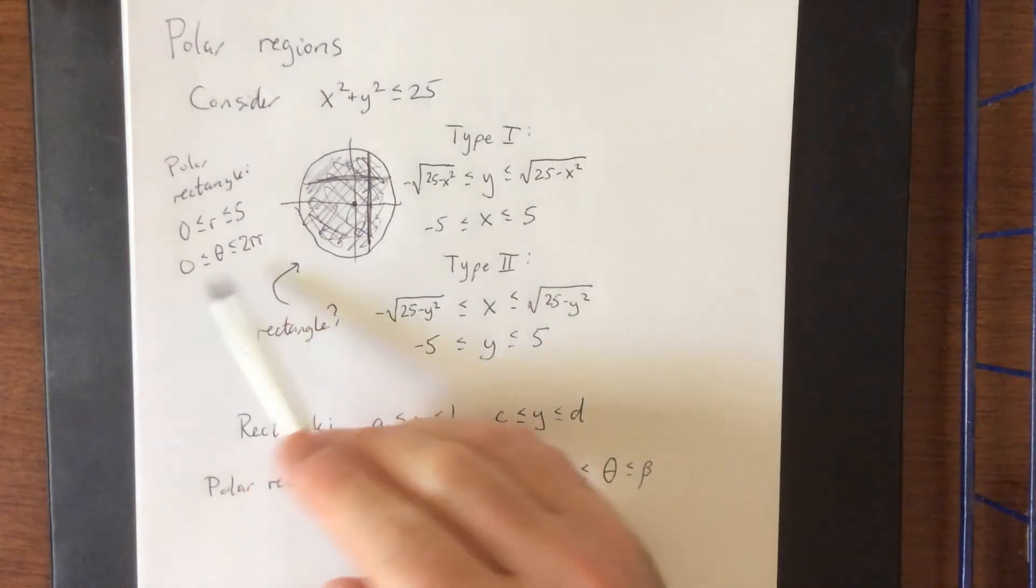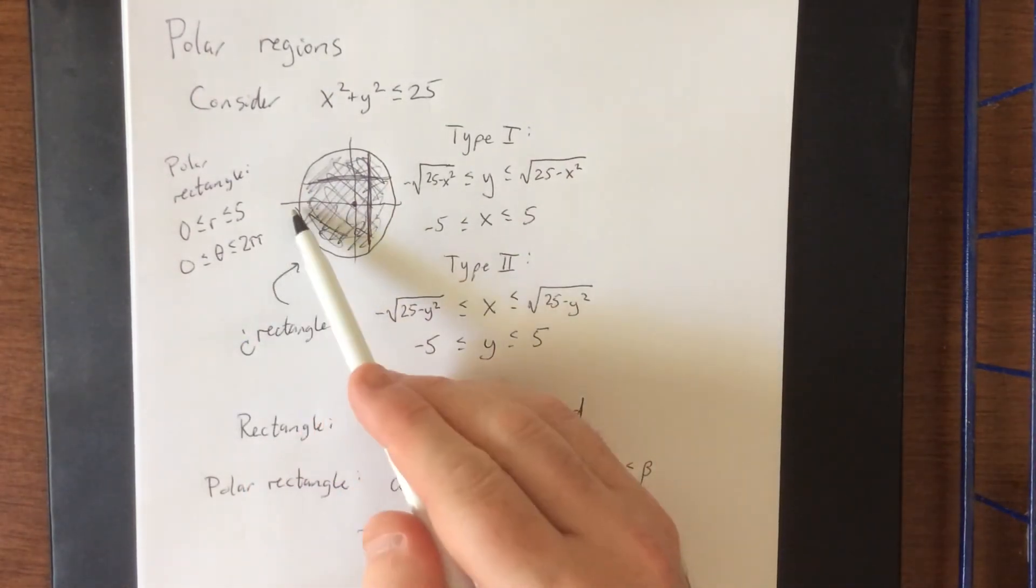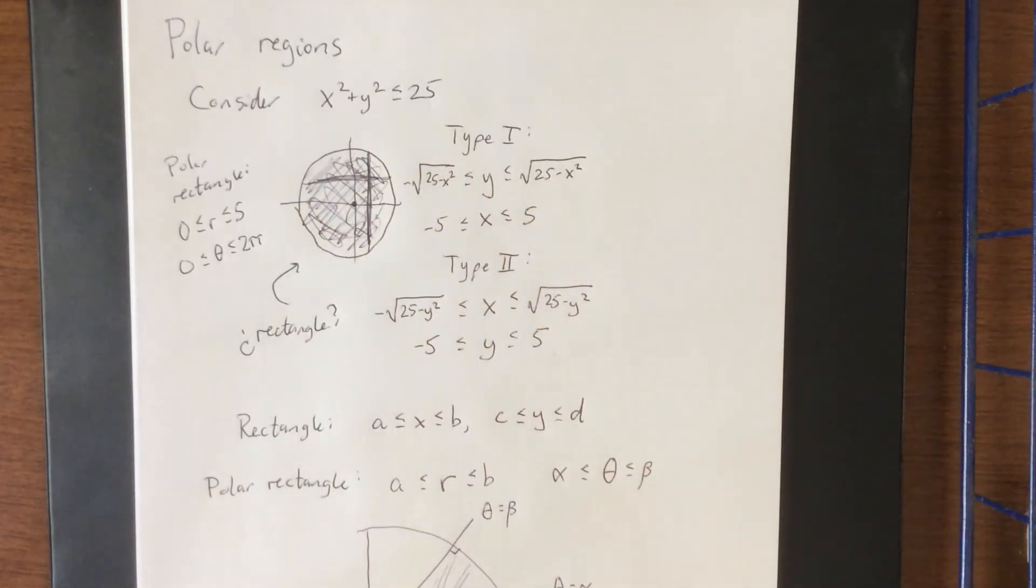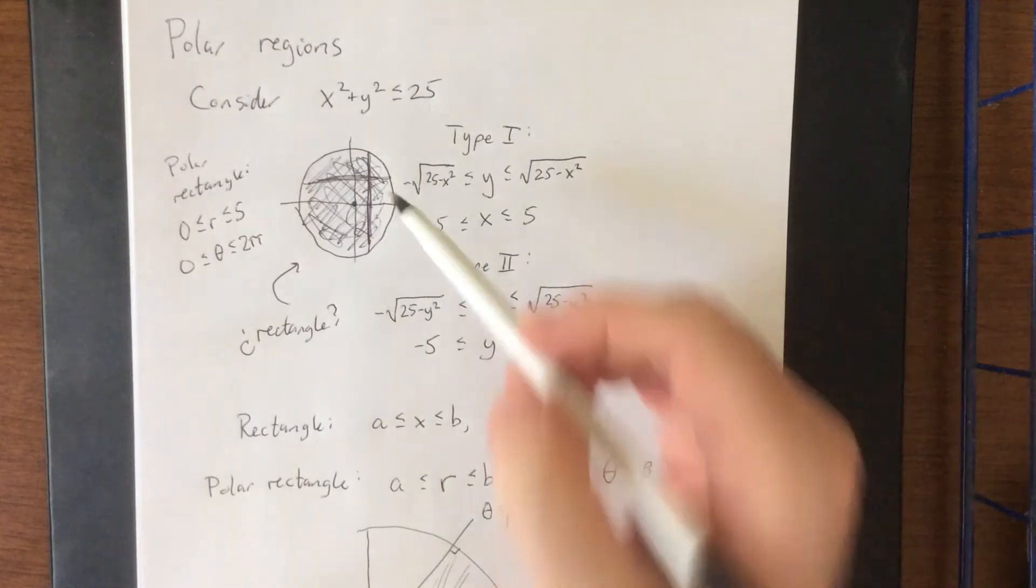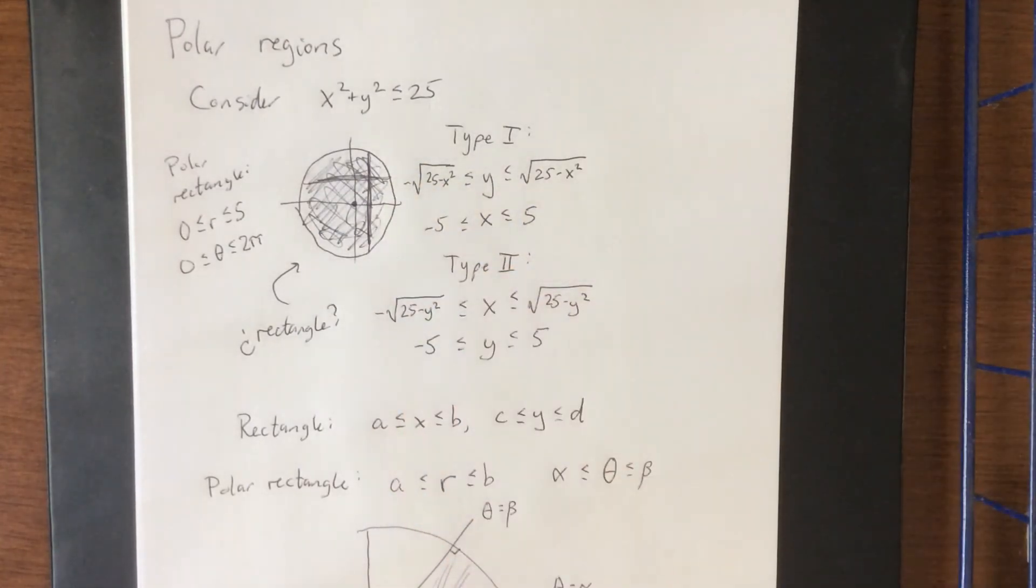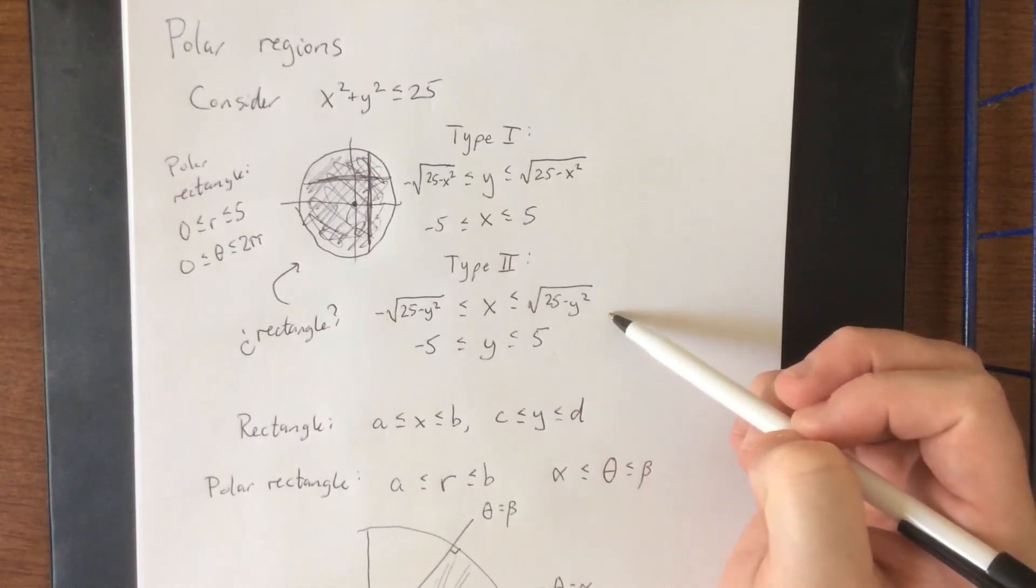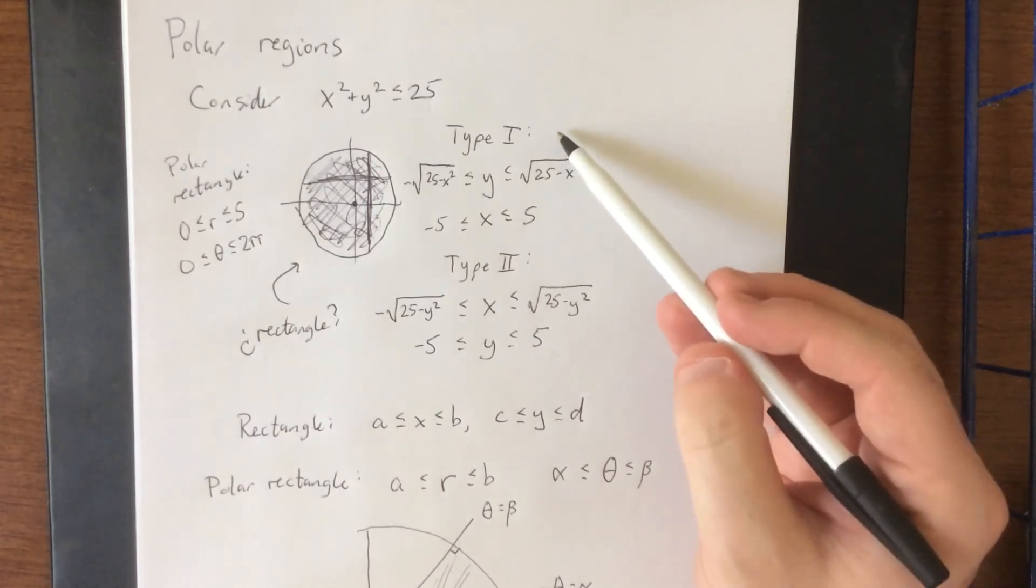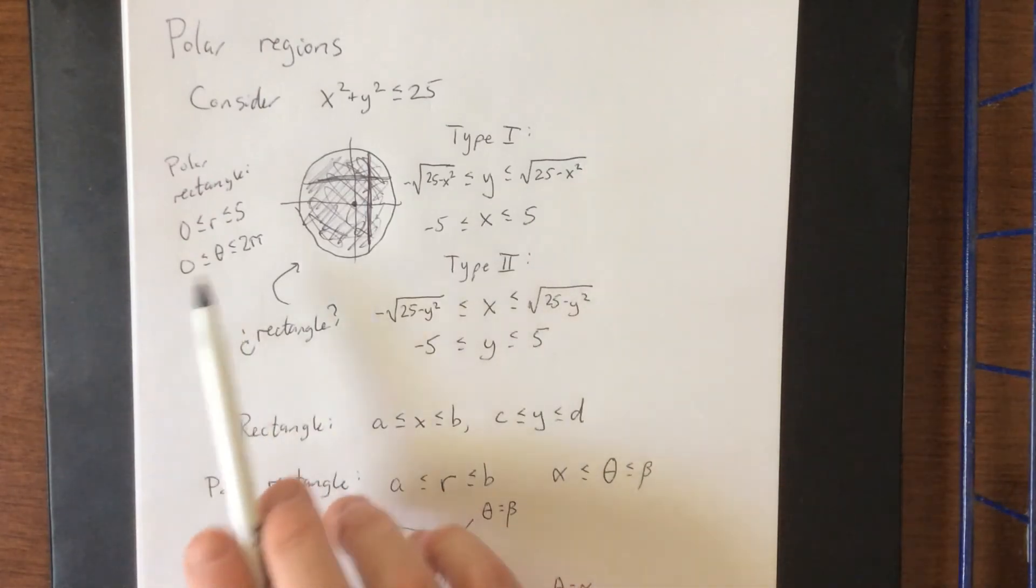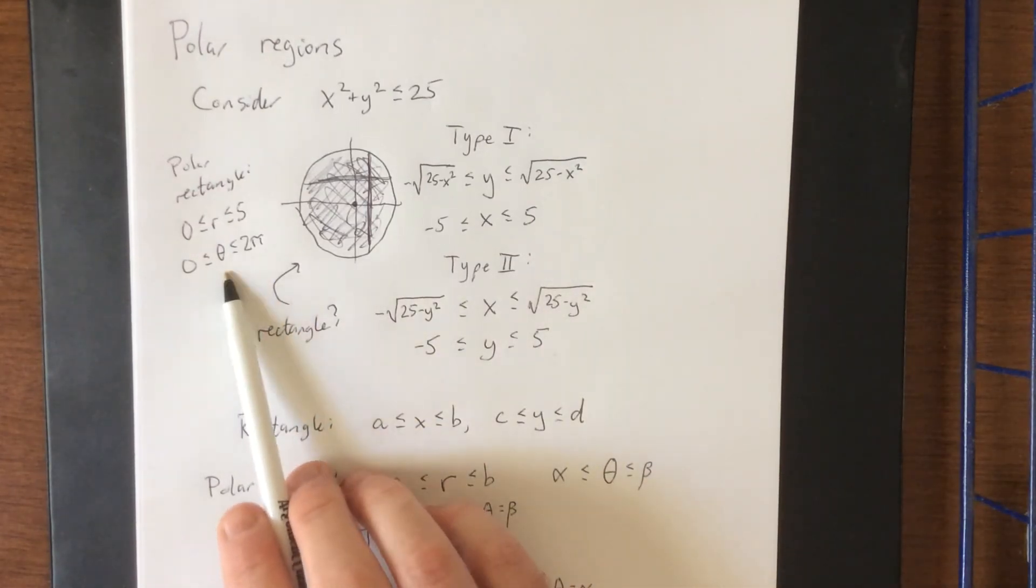And then theta can just be one full rotation about the coordinate plane. Now, typically, we would say 0 to 2 pi, but you could also say negative pi all the way up to positive pi. The possibilities are endless. The idea is polar regions are ones that tend to be more circular. Now, you let me know which one appears more fun to do in terms of setting up an iterated integral. A type 1 region, a type 2 region, or a polar rectangle region. Me, personally, I'm going to go with the polar rectangle on this one.